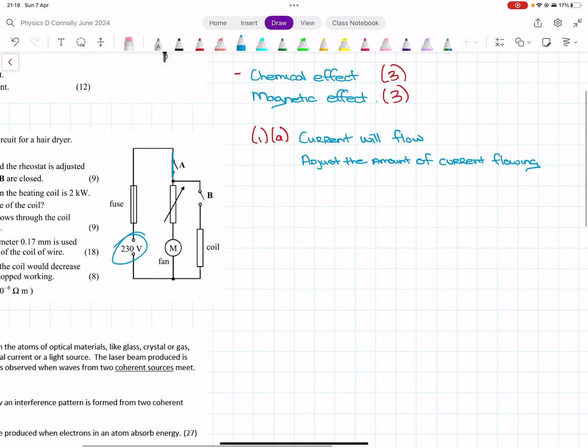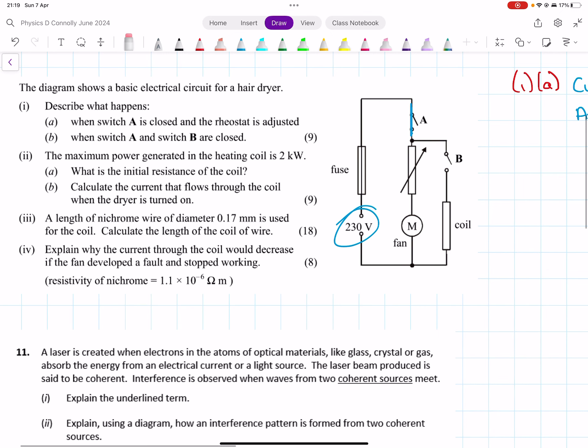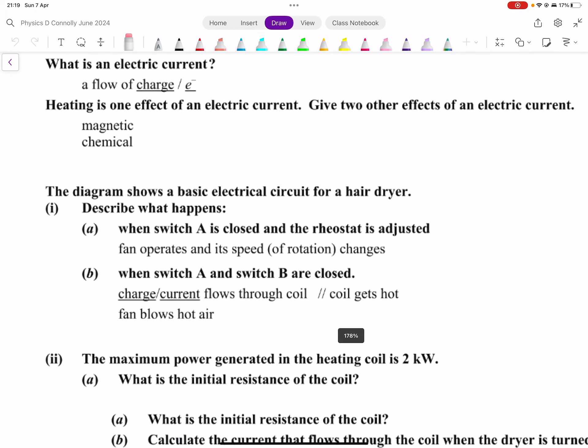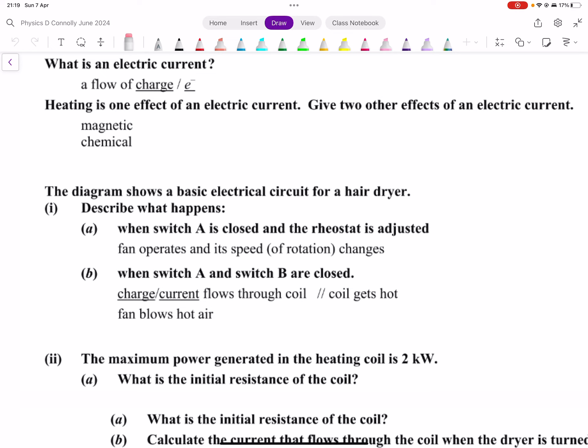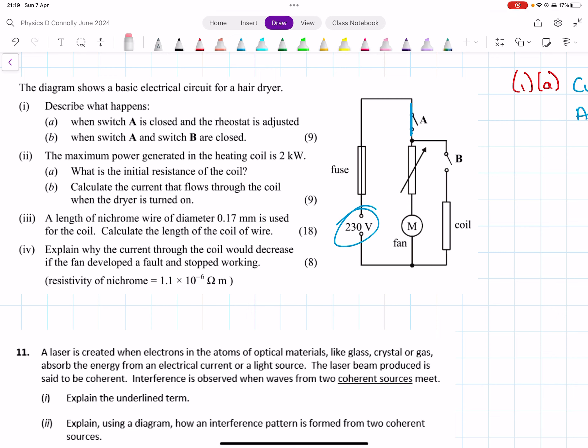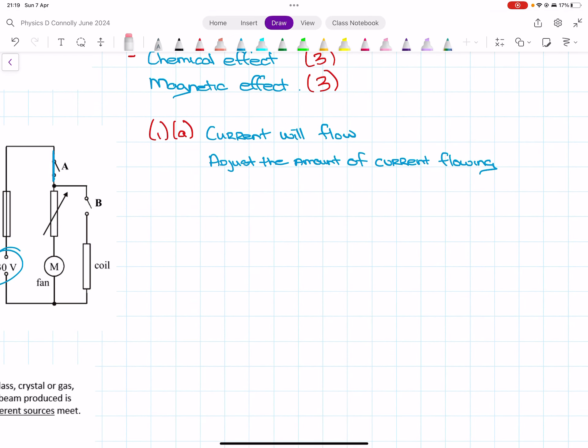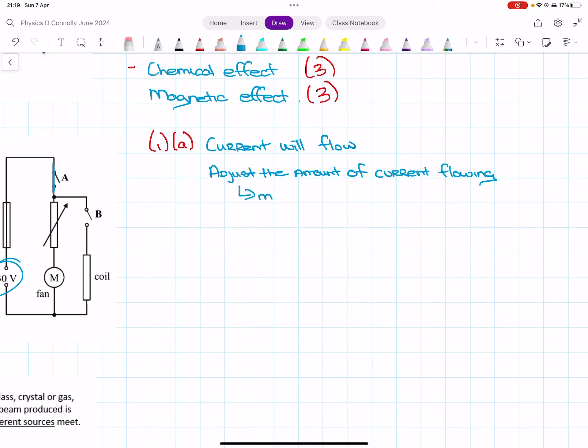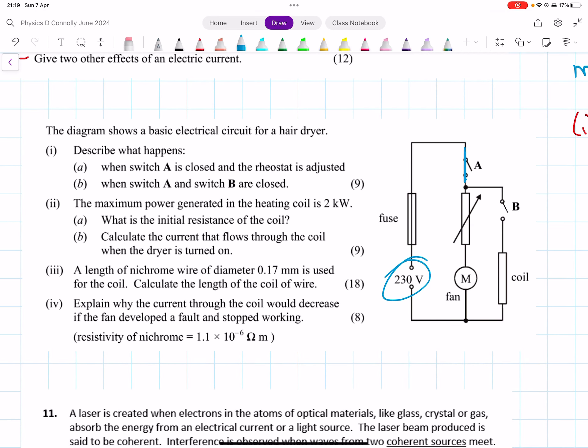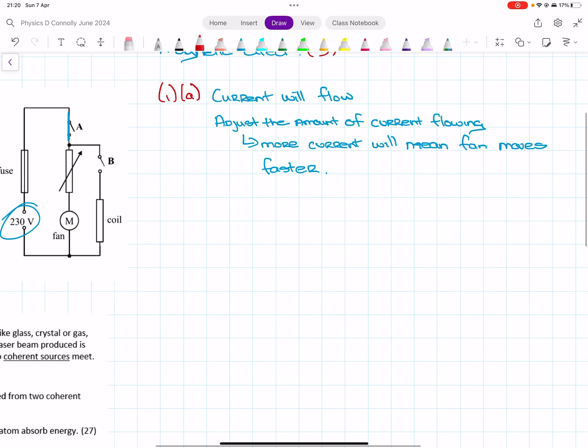If you adjust the rheostat, you can adjust the amount of current flowing. Speed of rotation changes—they're talking about the fan. So it will adjust the amount of current, and more current will mean the fan moves faster.